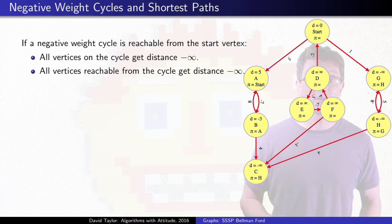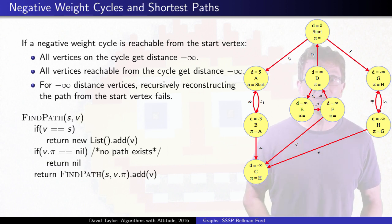One last thing, if you use the path reconstruction algorithm for a negative infinity length shortest path, it doesn't work. It will just take you backwards around that cycle, over and over. G comes from H, comes from G, don't try to reconstruct negative infinity weight paths.